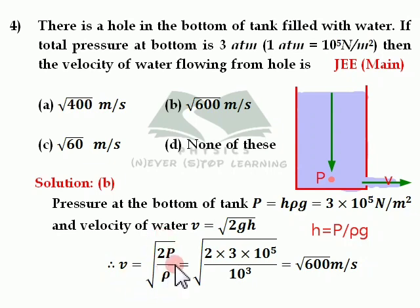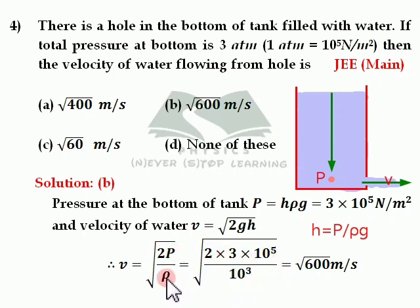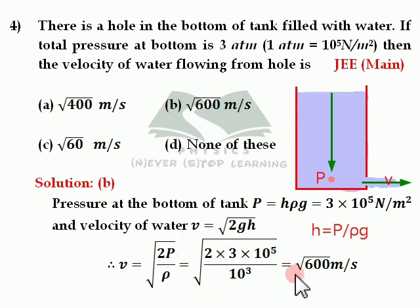Now calculate: P is 3 atmospheres, which is 3 into 10 to the power 5 pascals. Density of water rho is 1000 kg per meter cube, which is 10 to the power 3. So v equal to root of (2 into 3 into 10 to the power 5 divided by 10 to the power 3), which gives root of 600 meters per second. Option B is correct.